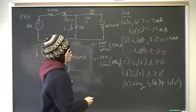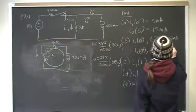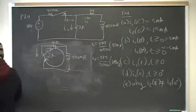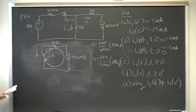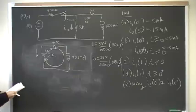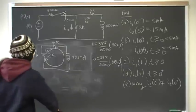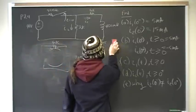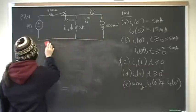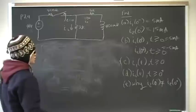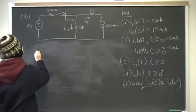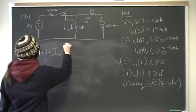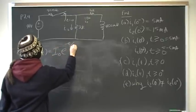So I2 will be negative 5 milliamps at that instant. Now we want to find the general equation for current after switching. The general equation for the natural response of current through the inductor is: I(t) equals the initial current times e to the negative t over tau.